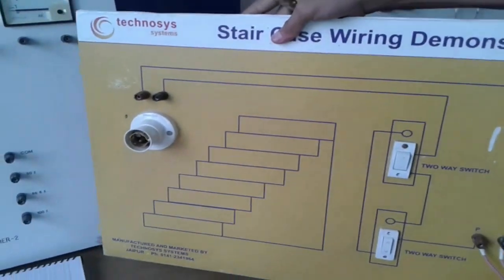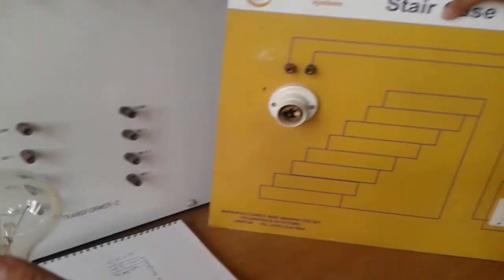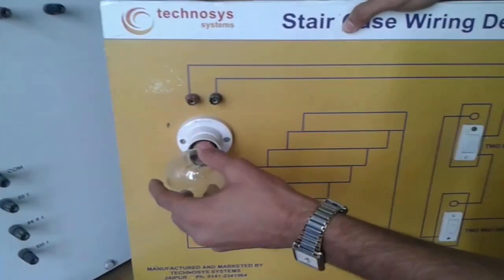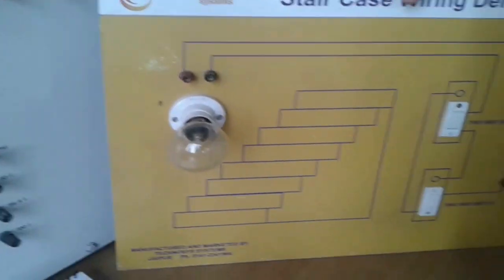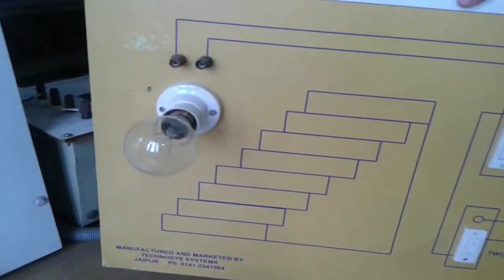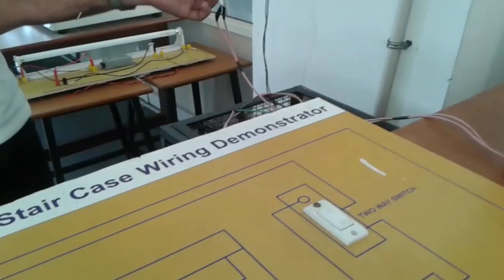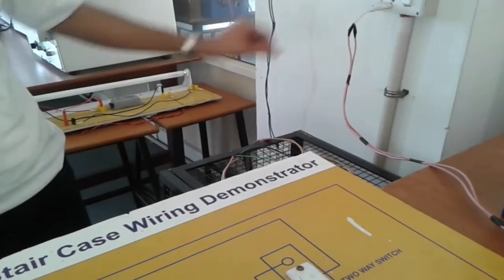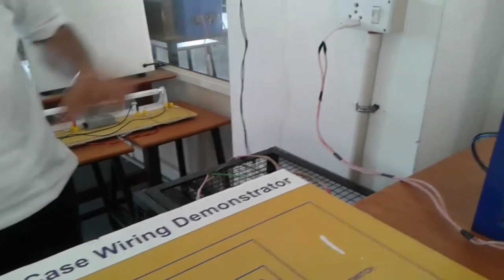So this is the front view of the board. Now we have to put this bulb to this holder. Now next step we have to give the connection. Now the main supply is being connected and we will switch on the connection.